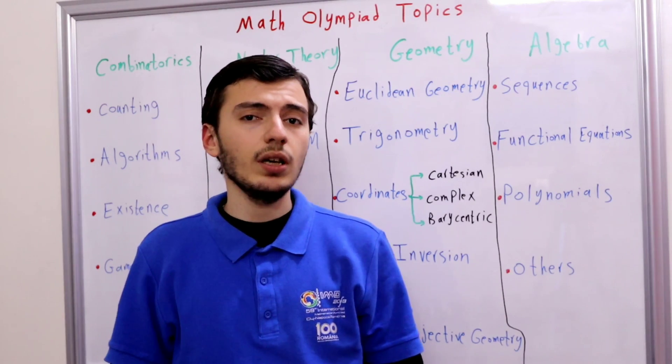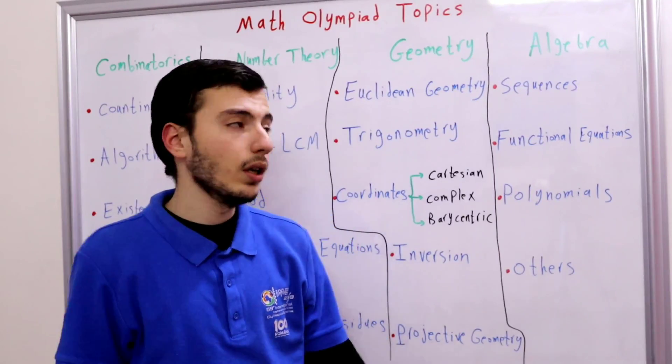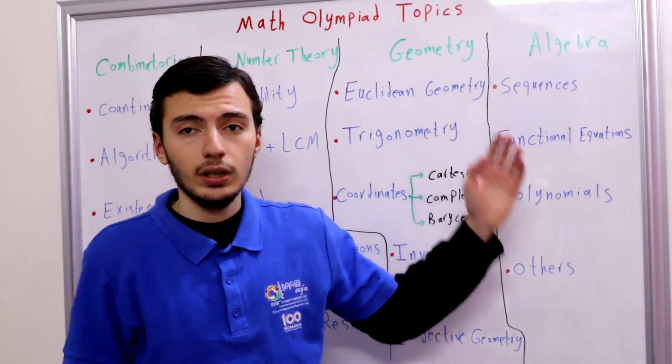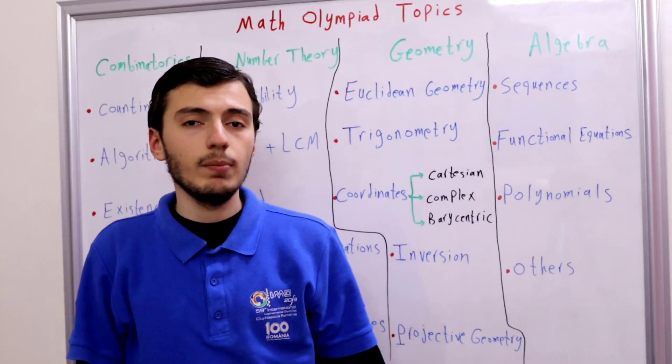So basically we have four main topics that are covered in Math Olympiad contests and those are algebra, geometry, number theory, and combinatorics. So let's discuss each one of them separately.